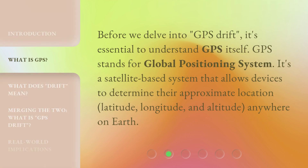Before we delve into GPS drift, it's essential to understand GPS itself. GPS stands for Global Positioning System. It's a satellite-based system that allows devices to determine their approximate location — latitude, longitude, and altitude — anywhere on Earth.